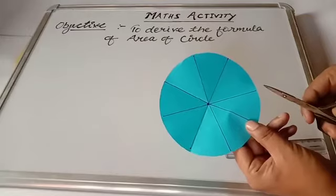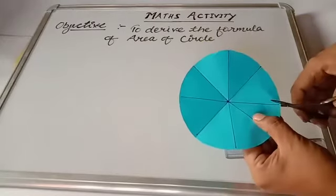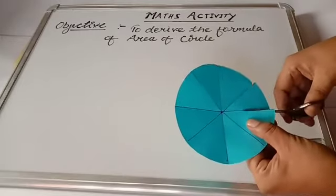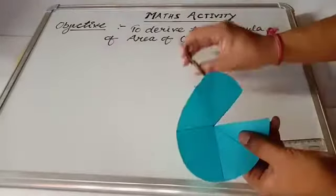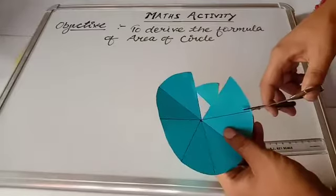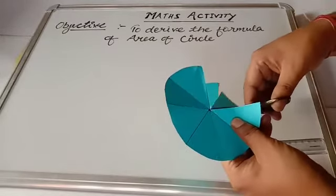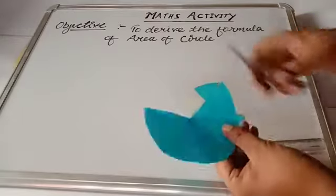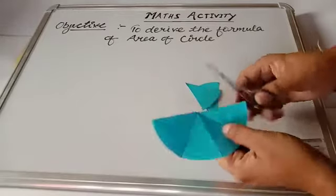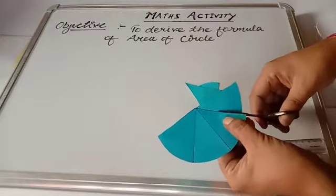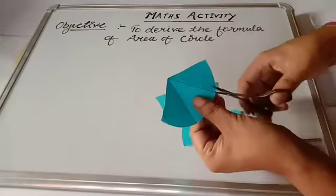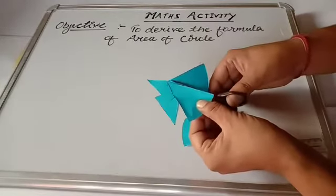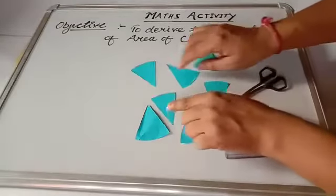Now let us cut these eight parts with the help of scissors. I am cutting the parts one by one — first part, second part. Whenever you are cutting these parts, be very careful and don't harm yourself. Third part, fourth part, fifth part, sixth part, and the seventh and eighth parts. So we have cut the circle into eight triangular pieces.